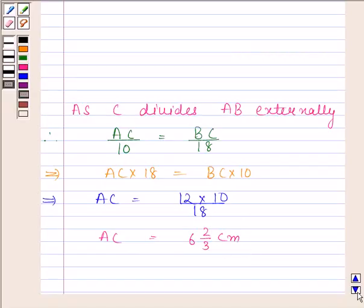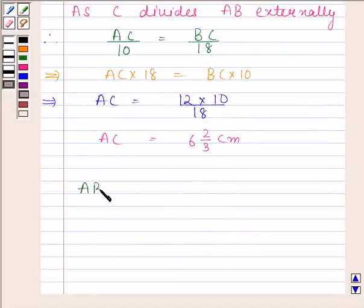Now we will find AB. AB is equal to BC minus AC. BC is equal to 12 centimeters and AC is equal to 6 and 2 by 3 centimeters. So AB is equal to 5 and 1 by 3 centimeters.